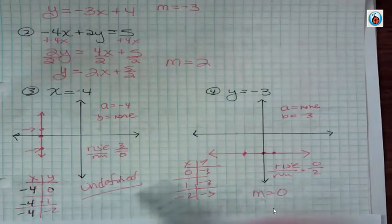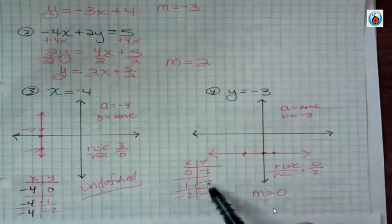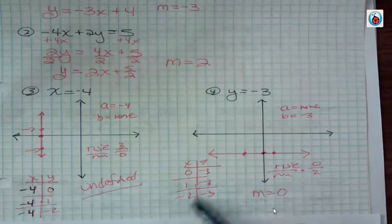But on the other hand, if y was negative 3, then y is negative 3, and x could be anything you want it to be. I chose 0, 1, negative 2. So I say if x is 0, y is negative 3.